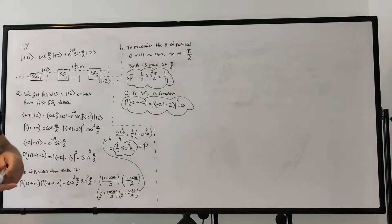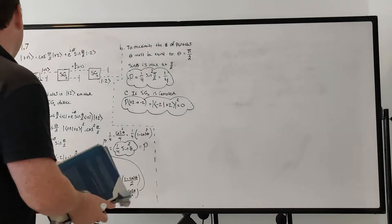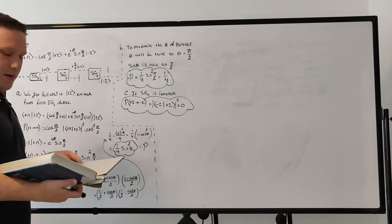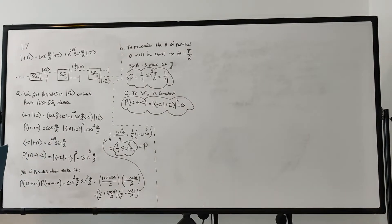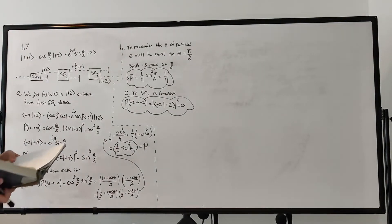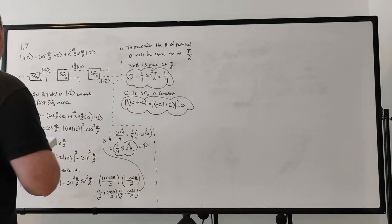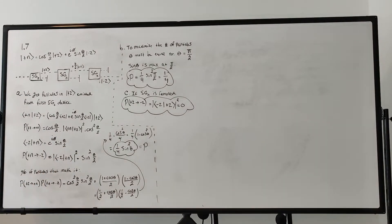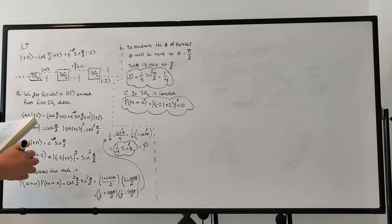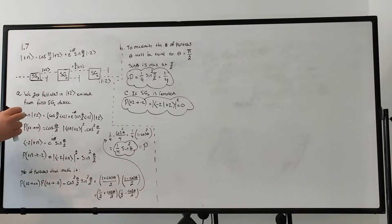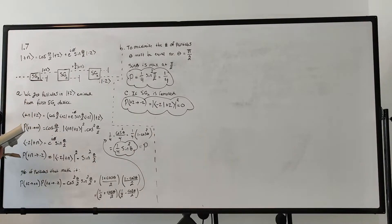Welcome to problem 1.7 of John Townsend's A Modern Approach to Quantum Mechanics. This problem states that we have a beam of spin one-half particles sent through a series of three Stern-Gerlach devices, as illustrated here.